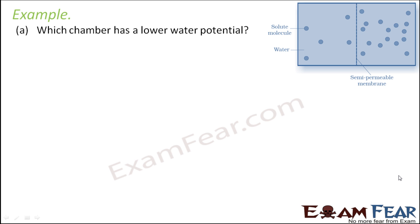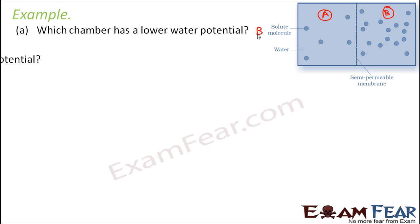Let us name these regions. Let us suppose this is region A and this is region B. So which chamber has lower water potential? Wherever the concentration of water is more, the water potential will be more. Water concentration is more in A and it is less in B. So since the water concentration is less in B, therefore the water potential is also less in B. So chamber B will have lower water potential.